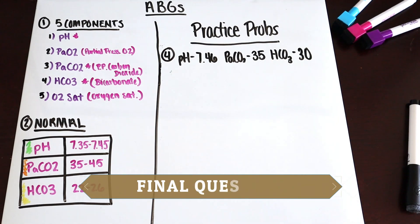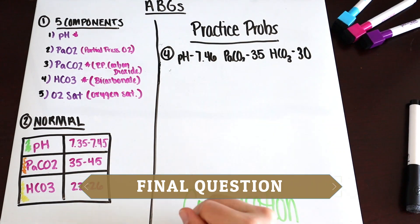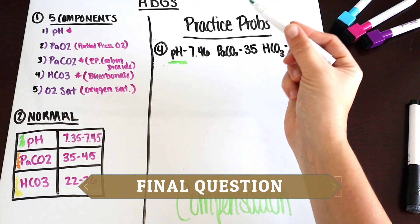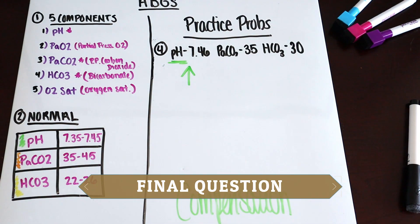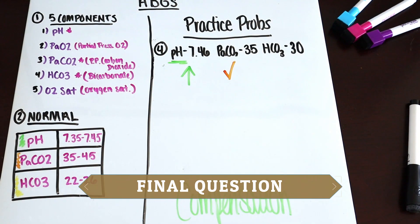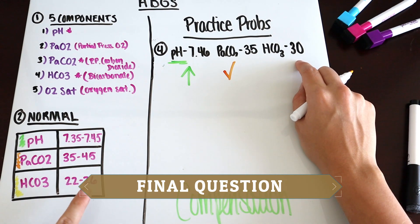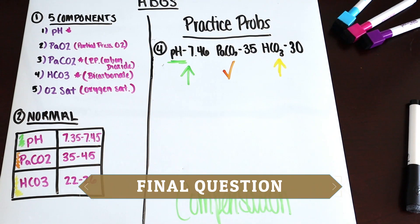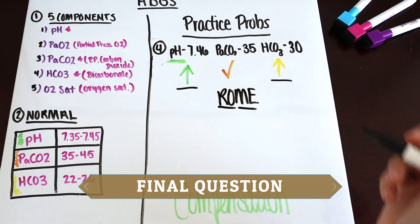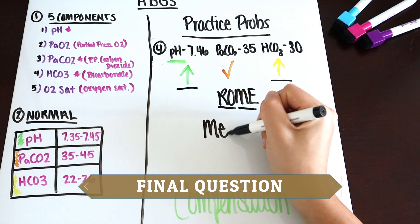Now let's start with our final question, question four — and after this we'll talk about compensation. Our pH is 7.46, which is high — draw your arrow up. Our PaCO2 is 35, which is normal. Our HCO3 is 30, which is high — arrow up. We have a high pH and a high HCO3. Remembering ROME — metabolic equal — both arrows going up means metabolic alkalosis.